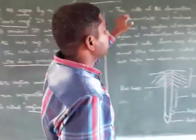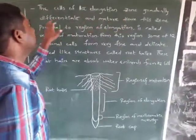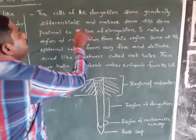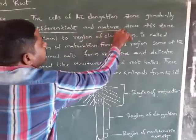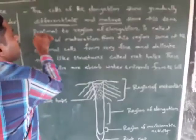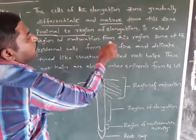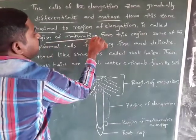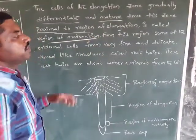The cells of the elongation zone gradually differentiate and mature. Hence, this zone proximal to the region of elongation is called the region of maturation.